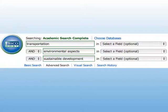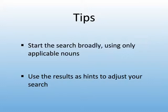Keep in mind, though, that adding terms to a search reduces the possible number of results. To recap, when searching a database, remember to start broadly using just the applicable nouns from the research topic. Using the results to adjust the search can help return more precise and useful results. If you get stuck or have questions, please feel free to consult a librarian.